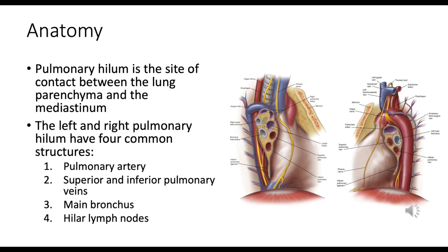The main bronchus — each primary bronchus — enters its respective lung at the hilum and then branches into secondary and tertiary bronchi. Hilar lymph nodes are small bean-shaped structures that filter lymph fluid, trapping bacteria, viruses, and other foreign substances, which are then eliminated by immune cells.